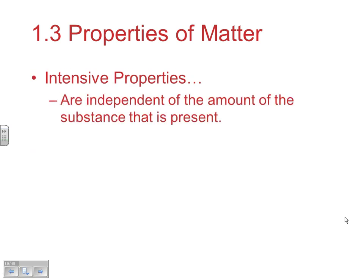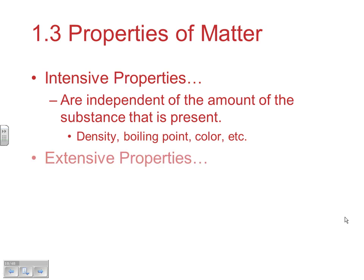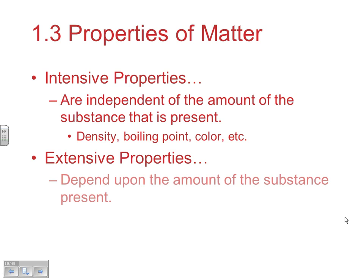Some properties are intensive — independent of the amount of substance present, like density, boiling point, or color. It doesn't matter how much you've got; that property stays the same. Extensive properties change depending on the amount of substance present — mass, volume, and total energy are all extensive properties.